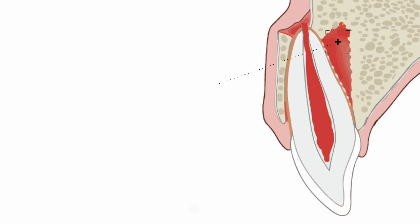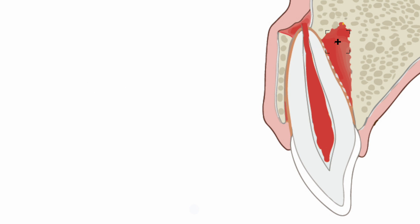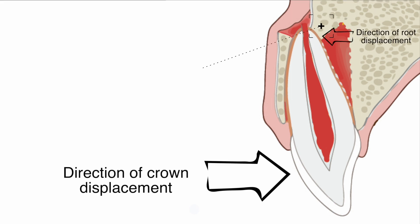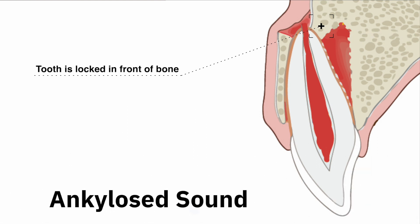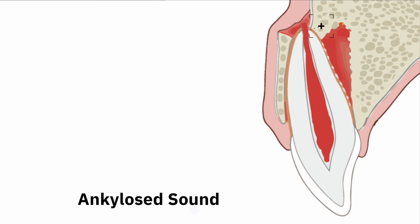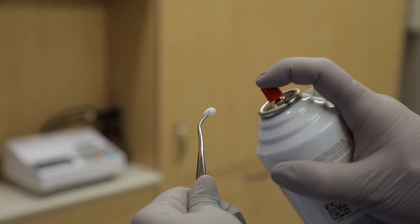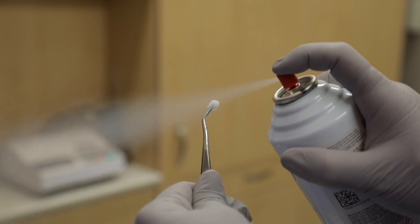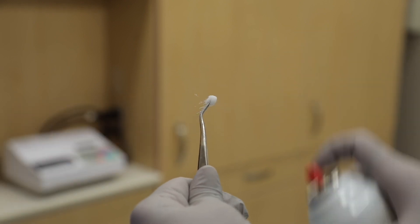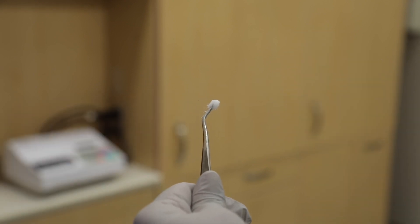A lateral luxation is characterized by partial or total separation of the PDL. The tooth will frequently be non-mobile because it gets locked in a position within the alveolar bone, and percussion will yield a high metallic or ankylosis sound. Pulp test the teeth — expect a negative response to cold, and there will be a higher likelihood of pulpal necrosis with this injury.